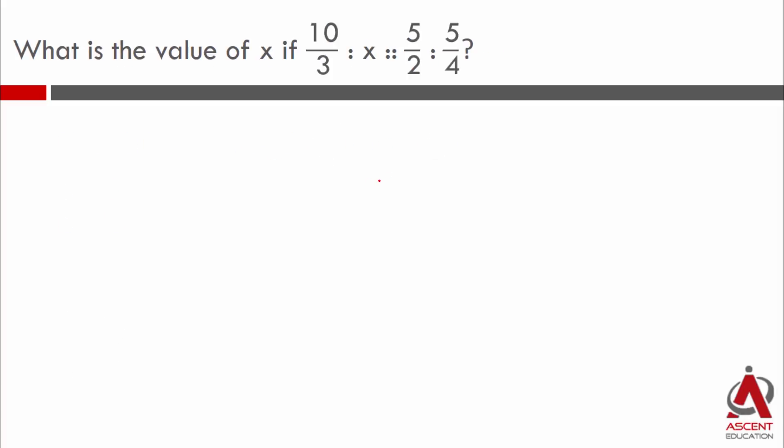If we have a ratio, a is to b is the same as c is to d, the product of the extremes a into d will be equal to b into c.